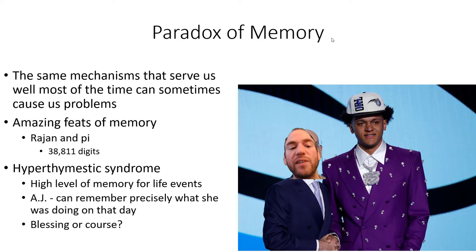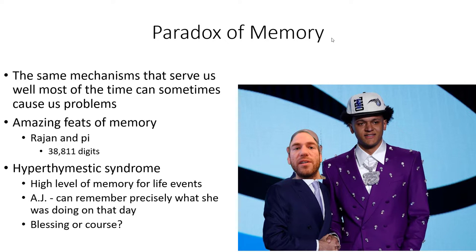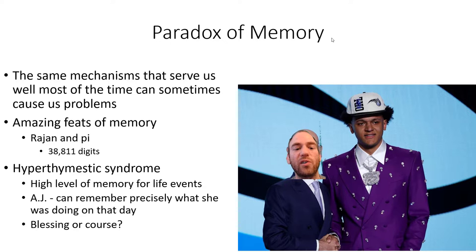There's also a syndrome called hyperthymistic syndrome, which is a high level of memory for life events. For example, there's a historical case of someone named AJ who could remember precisely what she was doing on any given day. Ask what she was doing on January 20th, 1995, and AJ could tell you exactly. This raises the question of whether such a disorder is a blessing or a curse — since forgetting can be beneficial, especially when something is harmful.